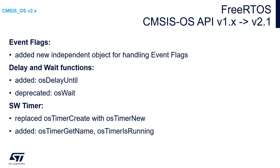Concerning other components, there is a new group of objects called event flags, which was not present in CMSIS-OS v1. It is an important change because event flags allow direct task-to-task communication, which is very useful. Additionally, OS delay until has been added, and the OS wait function has been removed within CMSIS-OS v2.